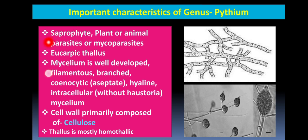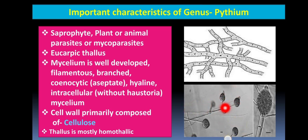To recap: this fungus is both saprophytic — growing on dead and decaying organisms — and parasitic, infecting living plants, animals, or other fungi. It has a eucarpic thallus where one part converts into reproductive structures such as sporangia for asexual reproduction, while another part remains vegetative.